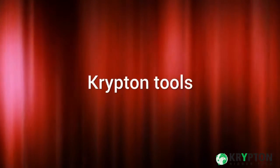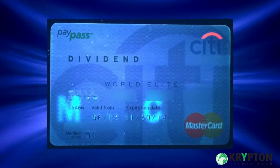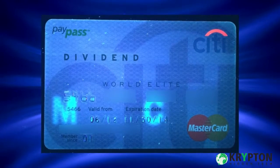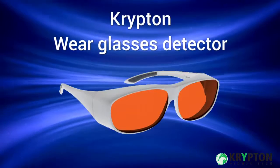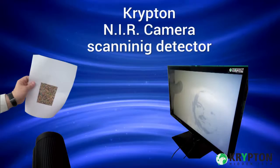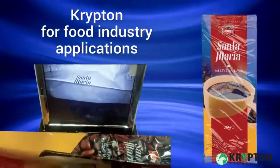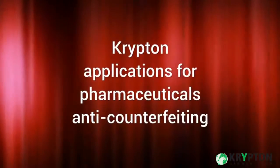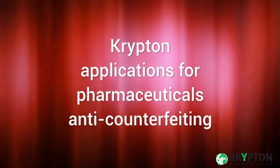Krypton tools. To display the hidden image created with Krypton technology, we have developed different tools. Our research is always in progress for new solutions. Here are some examples: Krypton wear glasses detector, Krypton NIR camera scanning detector, Krypton for food industry applications, and Krypton applications for pharmaceutical anti-counterfeiting.